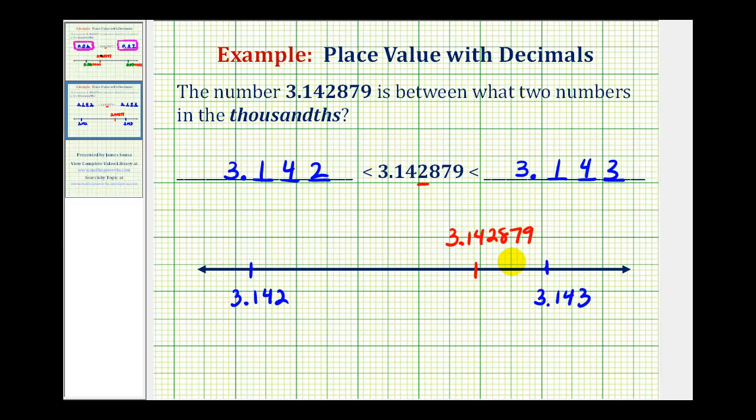Now, when trying to compare decimals, it's helpful if they have the same number of digits to the right of the decimal point. So let's go ahead and add three zeros here.